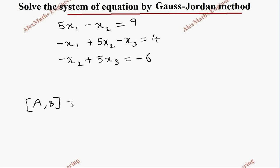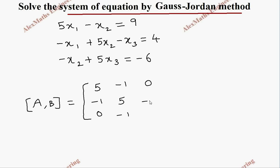In this matrix, the first column contains all the coefficients of x1, which are 5, -1, and 0 (no x1 term in the third equation). The second column has the coefficients of x2: -1, 5, and -1. The third column has coefficients of x3: 0, -1, and 5. The last column has the constants: 9, 4, and -6.